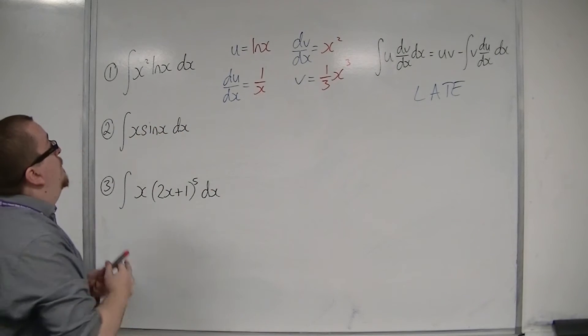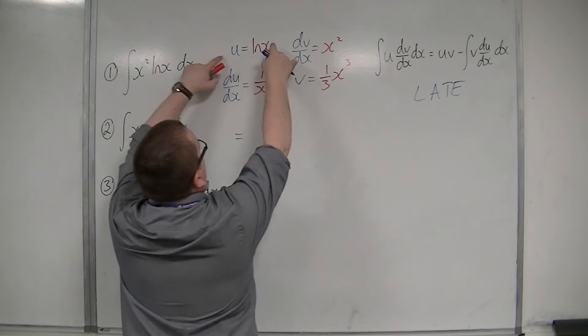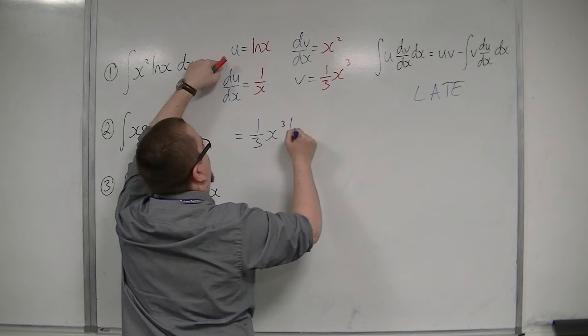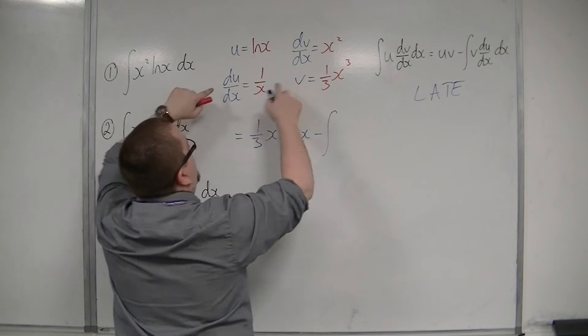And so the integral is equal to u times v. So u times v, so 1 third x cubed log x. Take away the integral of v du by dx.